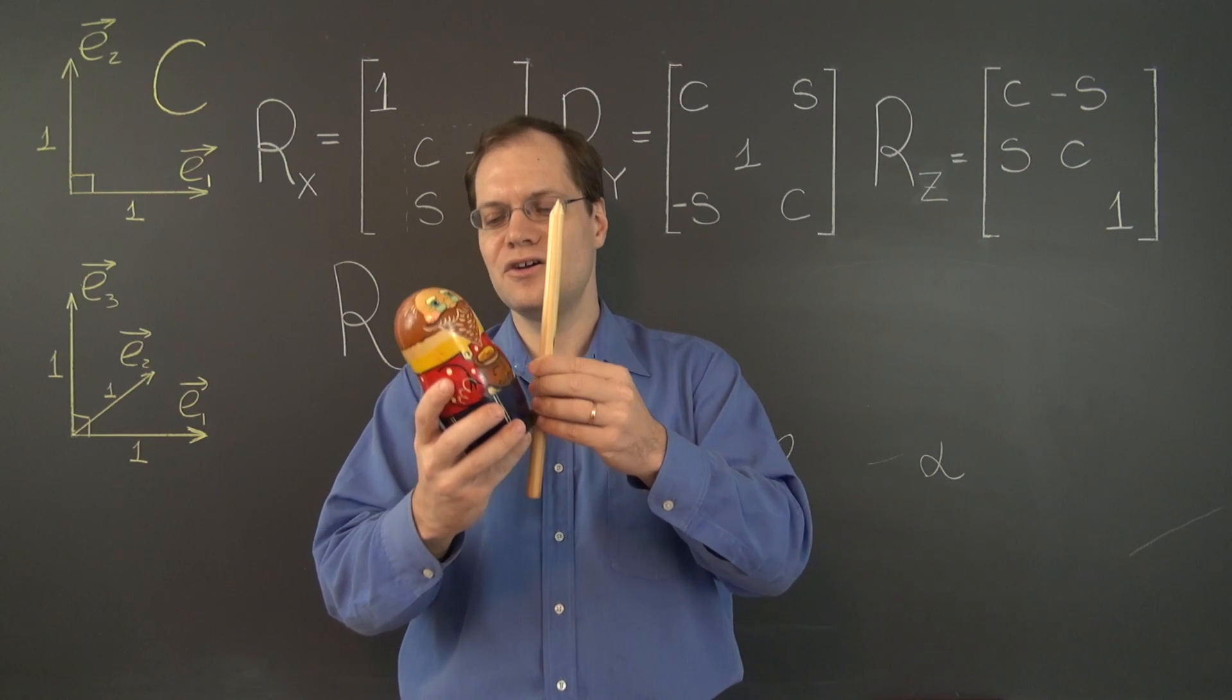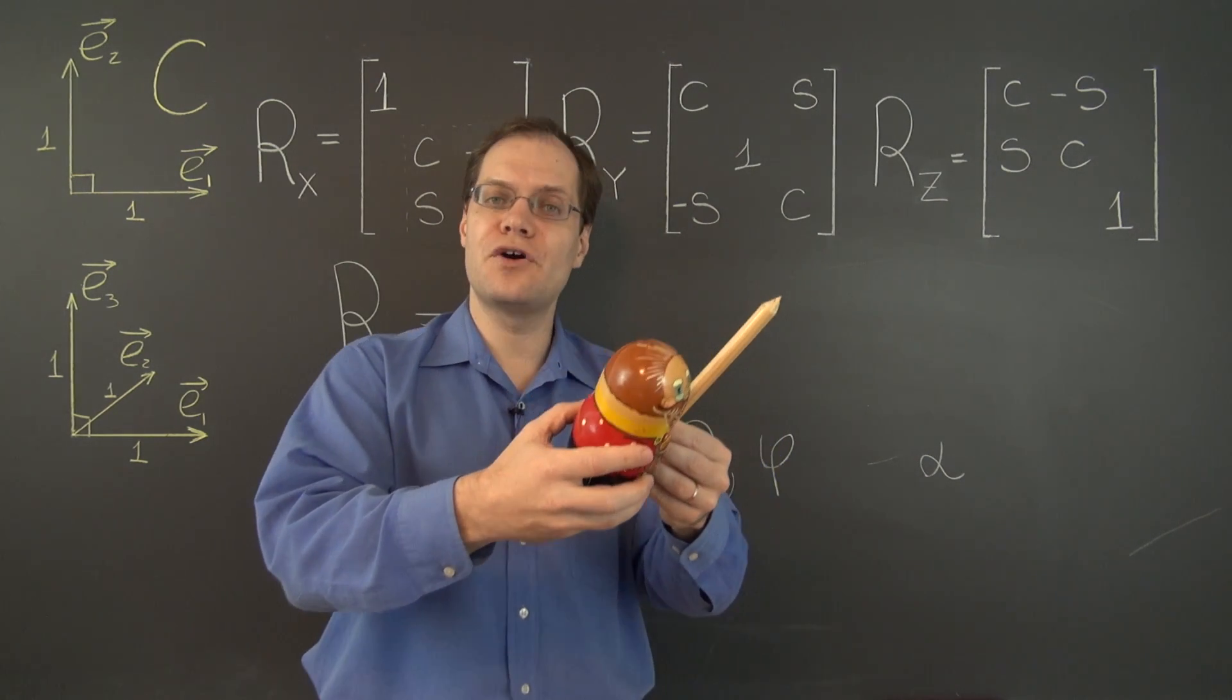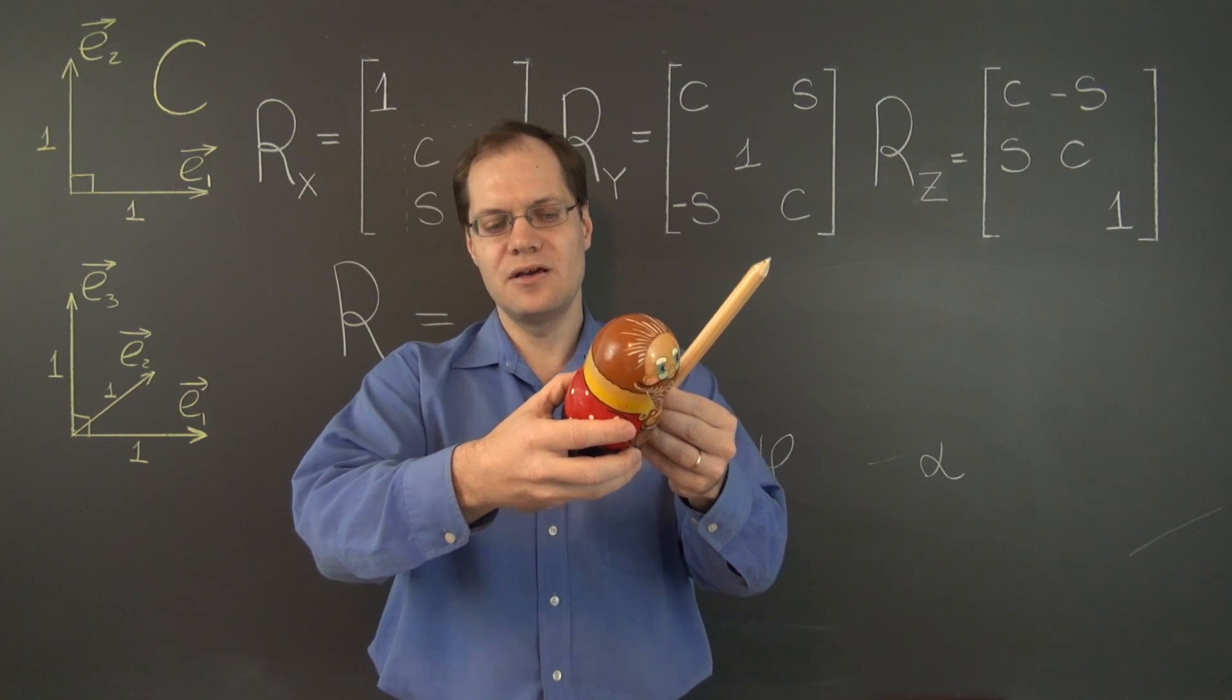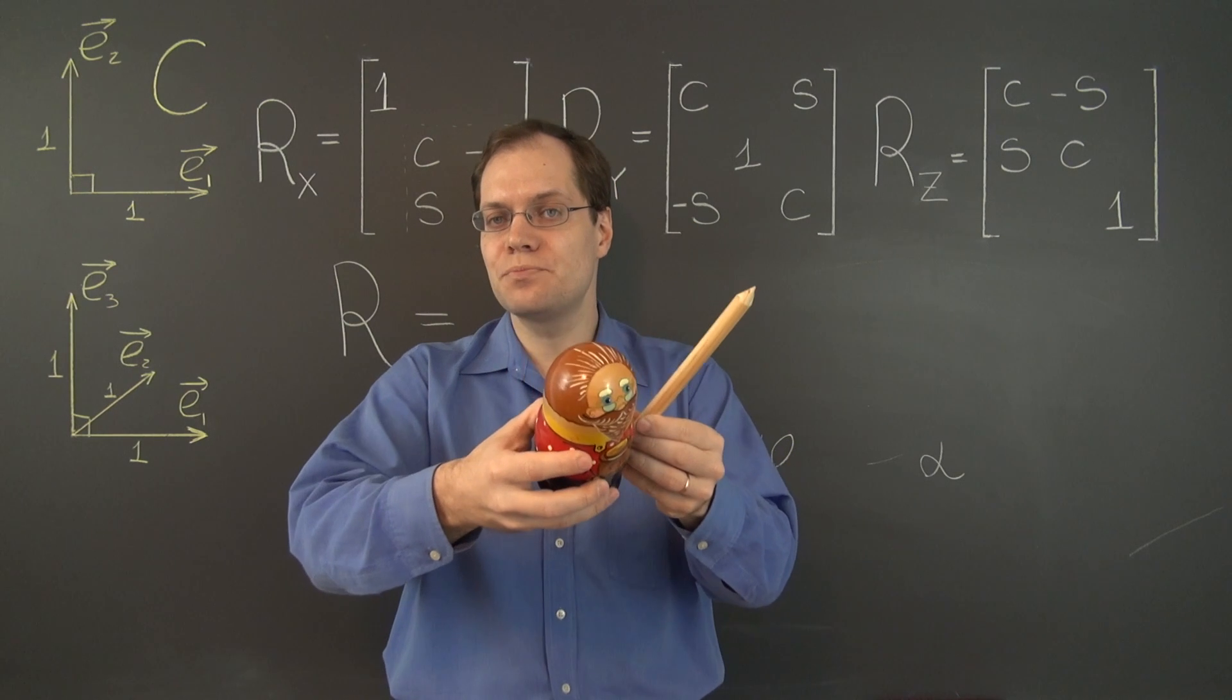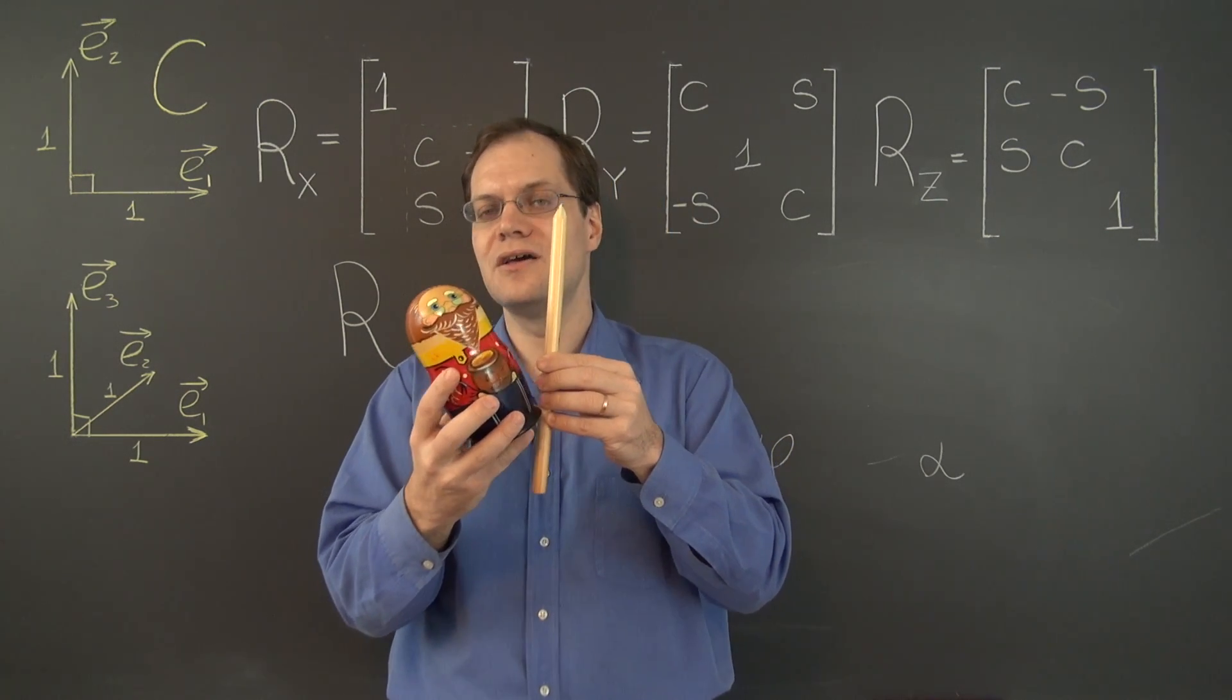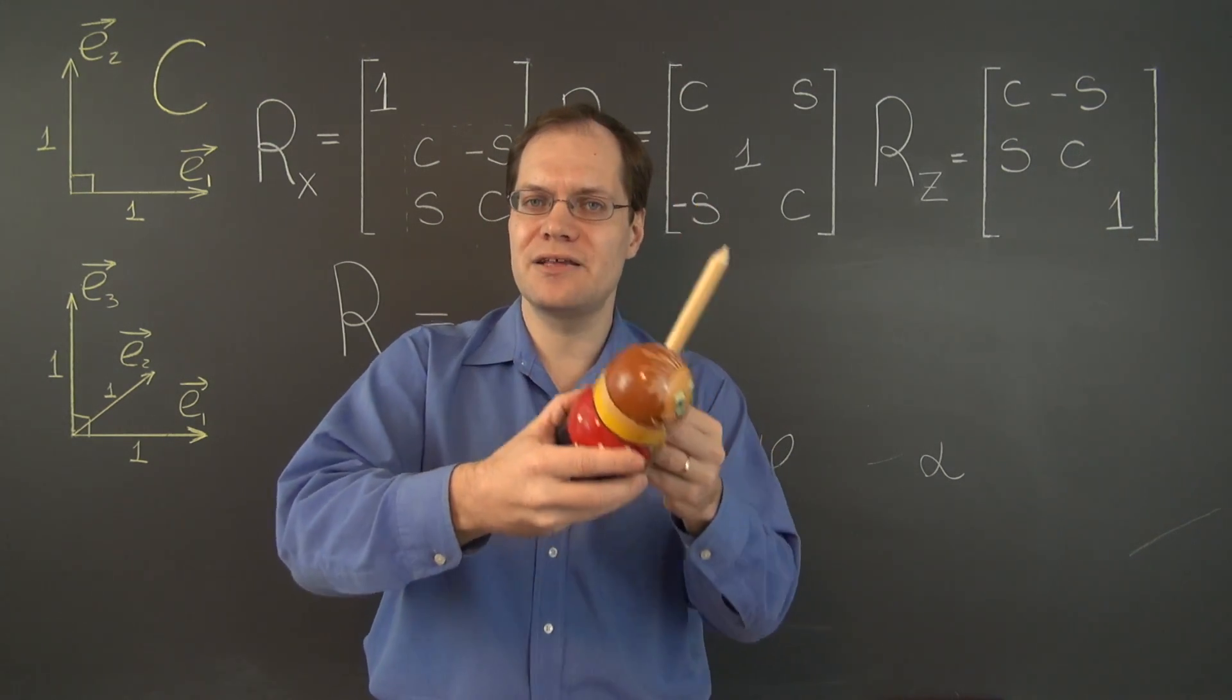Bring it here, do the rotation, bring it back. And during the first step of this algorithm, the relative configuration of the axis and the body don't change because you bring them together by the same transformation. Then you perform the rotation and then you bring them back together.